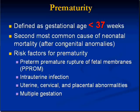Prematurity and congenital anomalies are the two overwhelming biggest causes of neonatal mortality. Prematurity itself is probably a little bit behind congenital anomalies overall, but it's not far behind, and it has its own risk factors. So why are babies born prematurely? Here are the four main reasons.